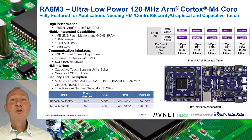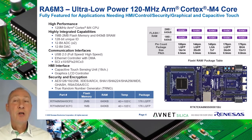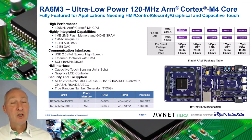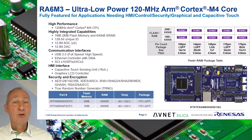Here you see a summary of the main features of the RA6M3, and also an image of the EK-RA6M3 evaluation board that incorporates a J-Link debugger and a large assortment of expansion headers. I will be using this board in the demo later on in this video.